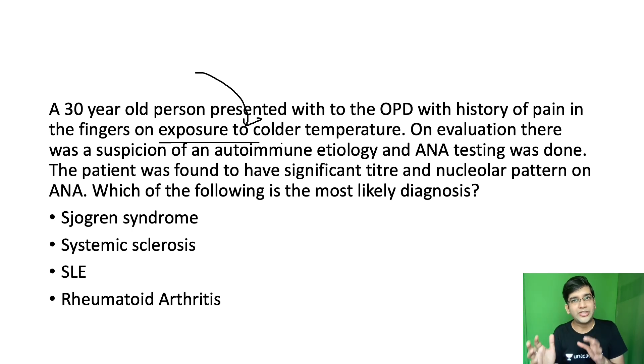But the etiology of Raynaud's phenomenon if you look at Harrison it's like an entire page. Many things can cause Raynaud. We have primary secondary Raynaud's, there are lots of drugs and everything. Here the question itself says that they are suspecting an autoimmune etiology. So when I come to rheumatological diseases again there's a number of things which can cause Raynaud's phenomenon and all the four options unfortunately will cause Raynaud's phenomenon.